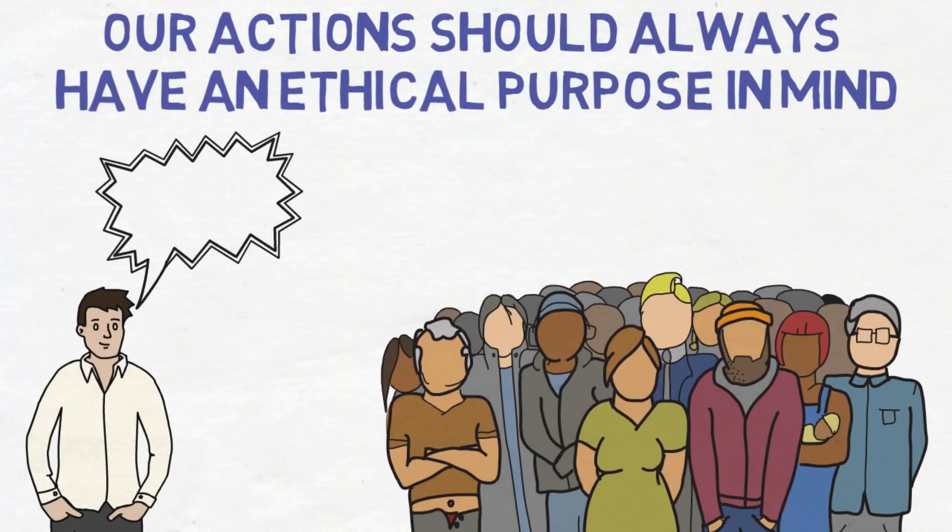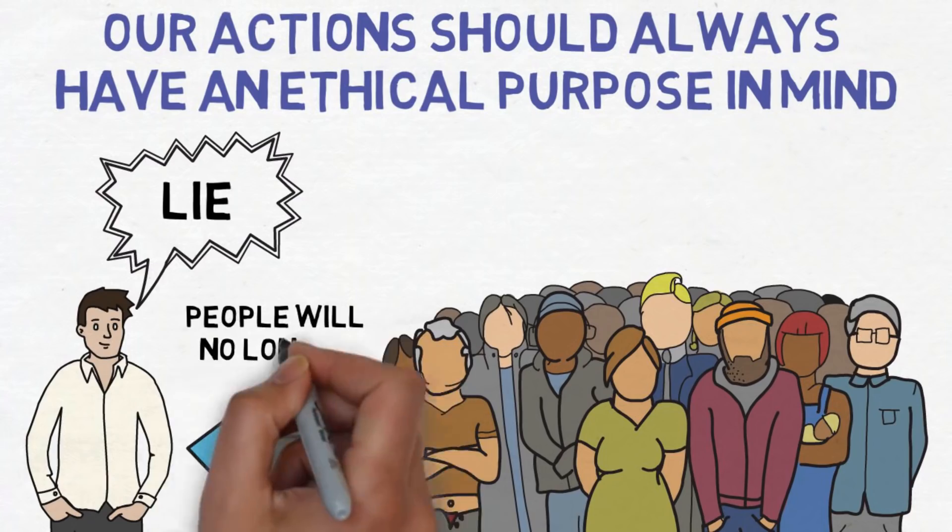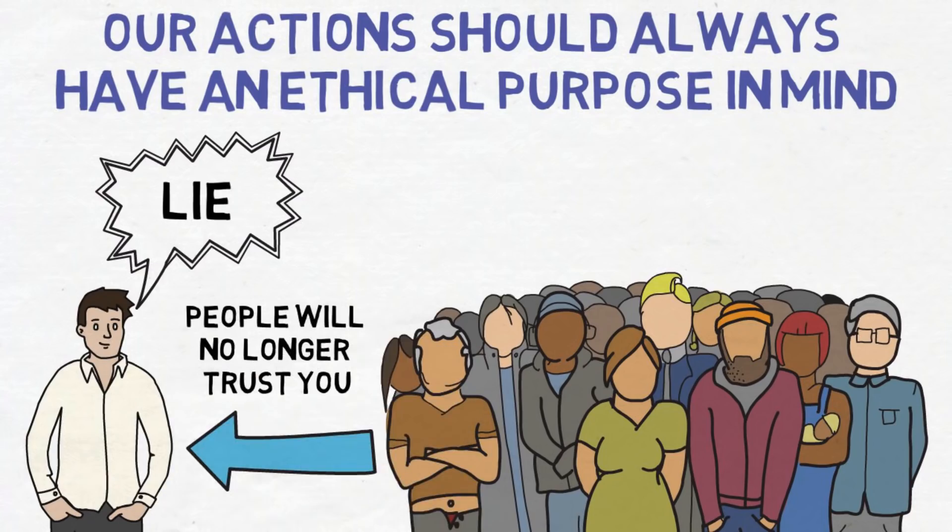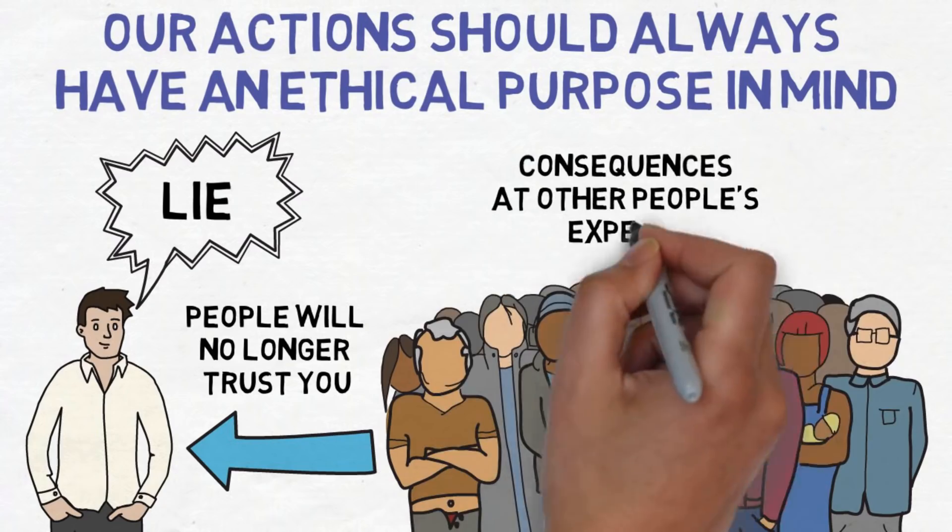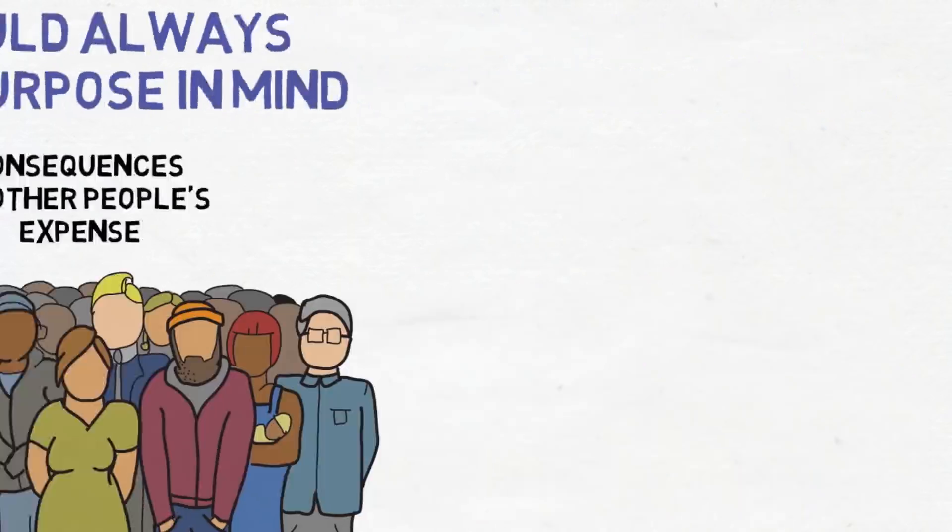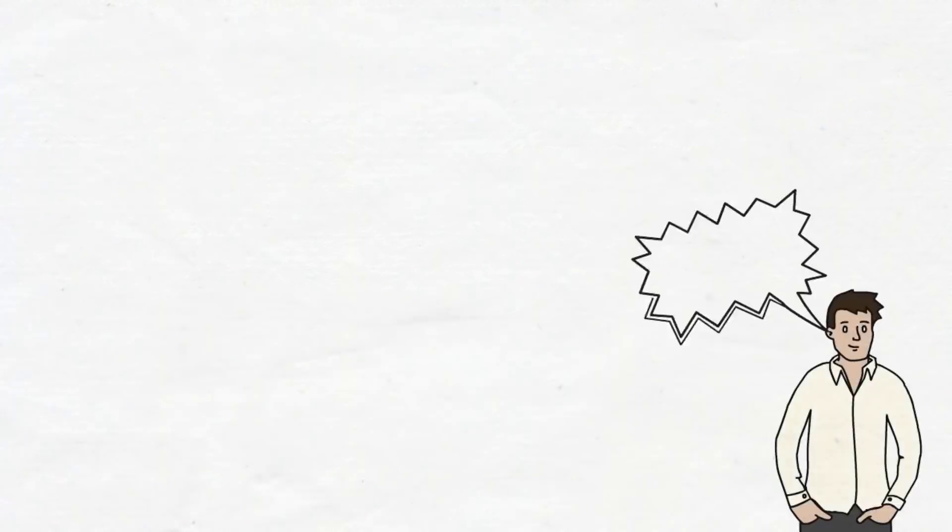Let's take the example of lying. If you lie, this will reflect on you. People will no longer trust you and that can have an impact on how they treat you in future. Even if you are not caught, there will still be consequences at other people's expense. One bad choice can destroy your character, so be careful what you do.